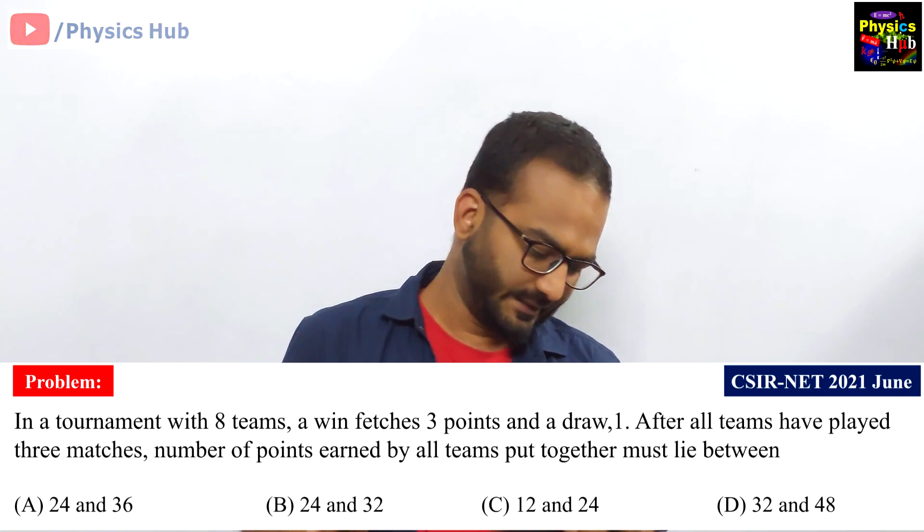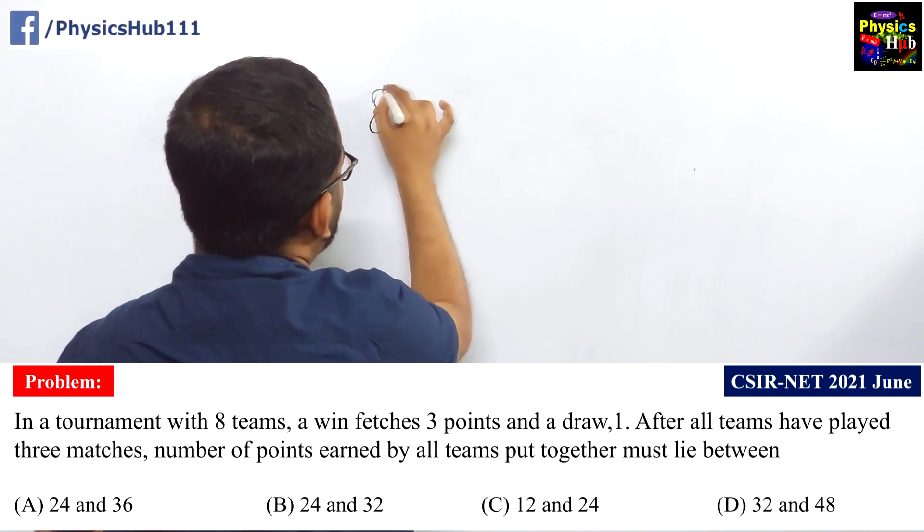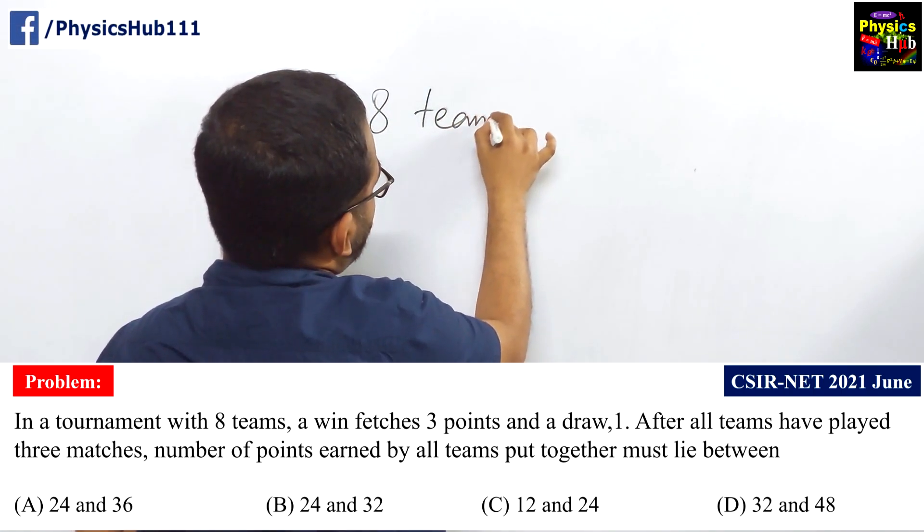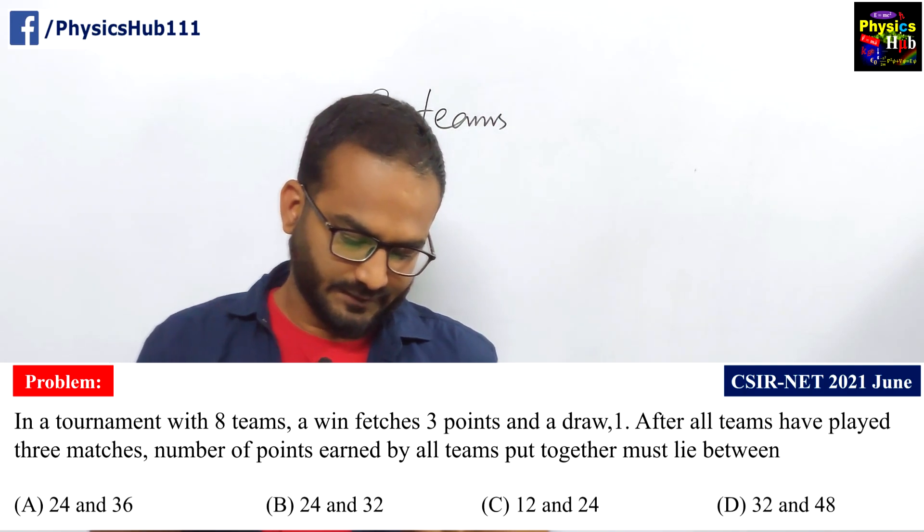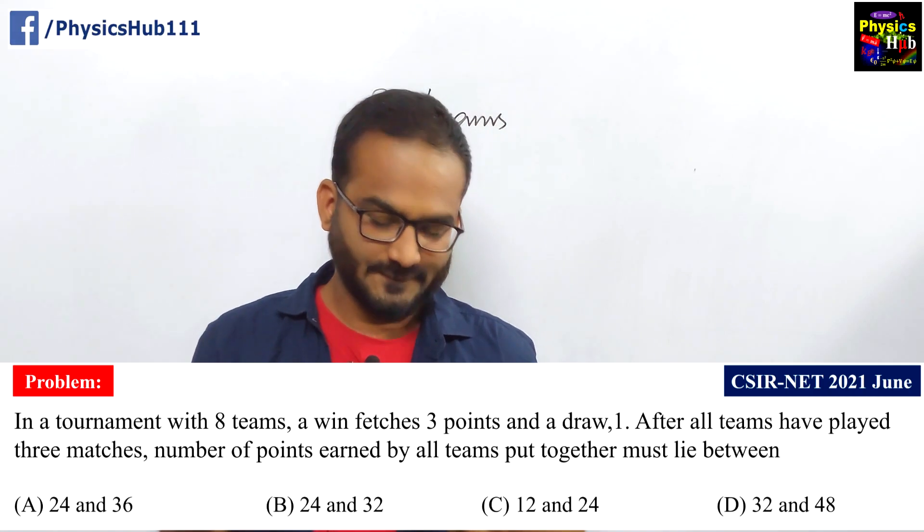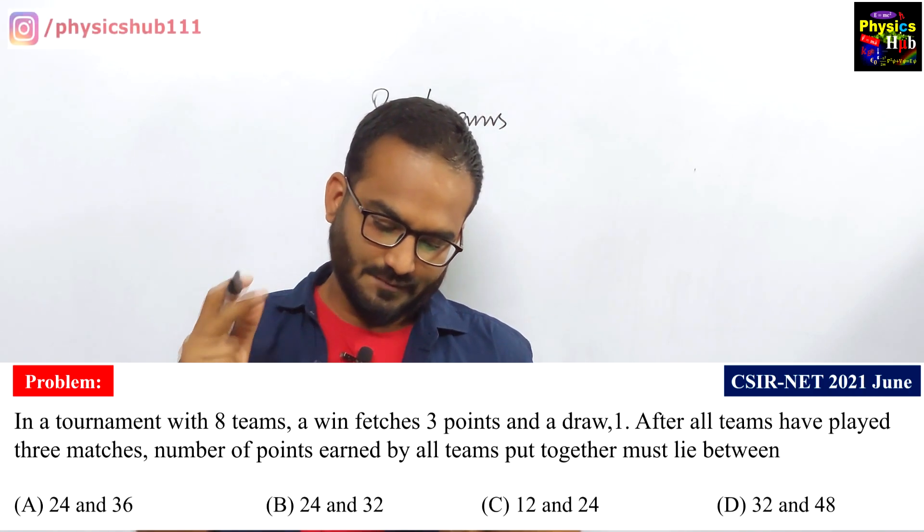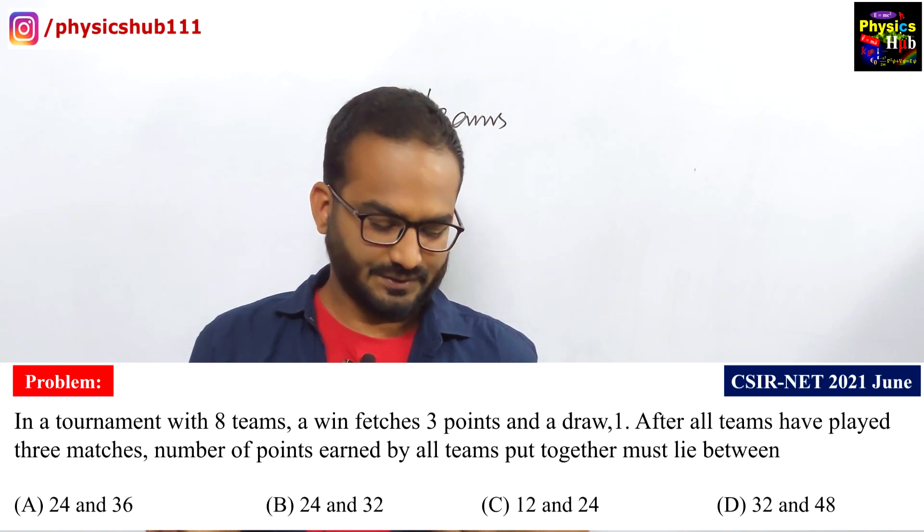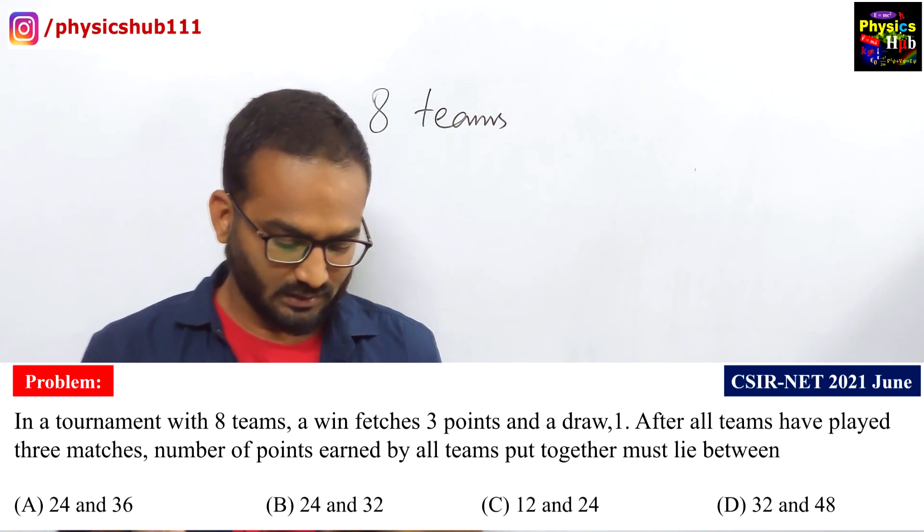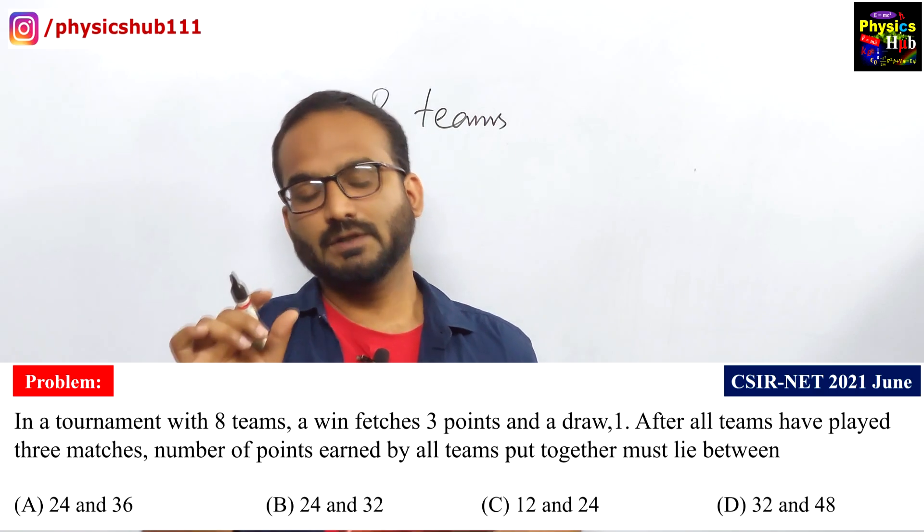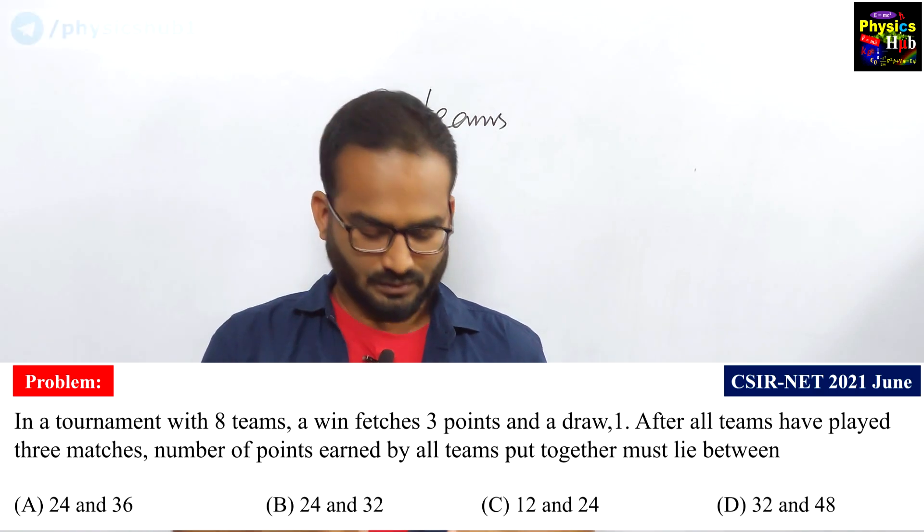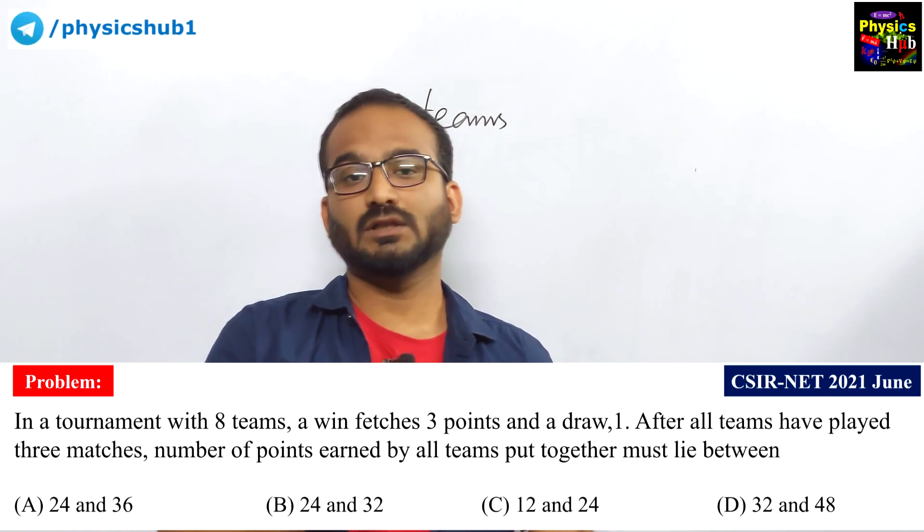In a tournament with 8 teams, so we have total 8 teams. Let us read the question first. In a tournament with 8 teams, a win fetches 3 points and a draw 1. After all teams have played 3 matches, number of points earned by all teams put together must lie between. So, what will be the total number of points earned by all these 8 teams?